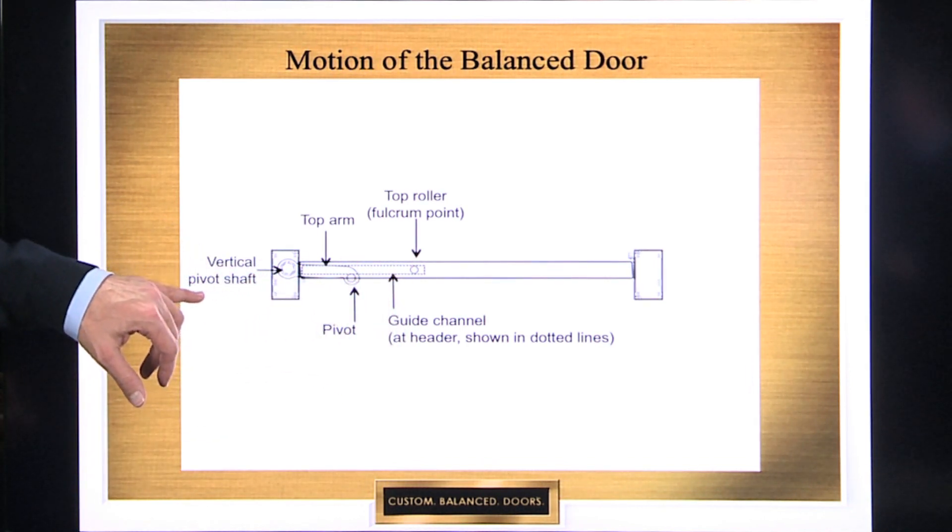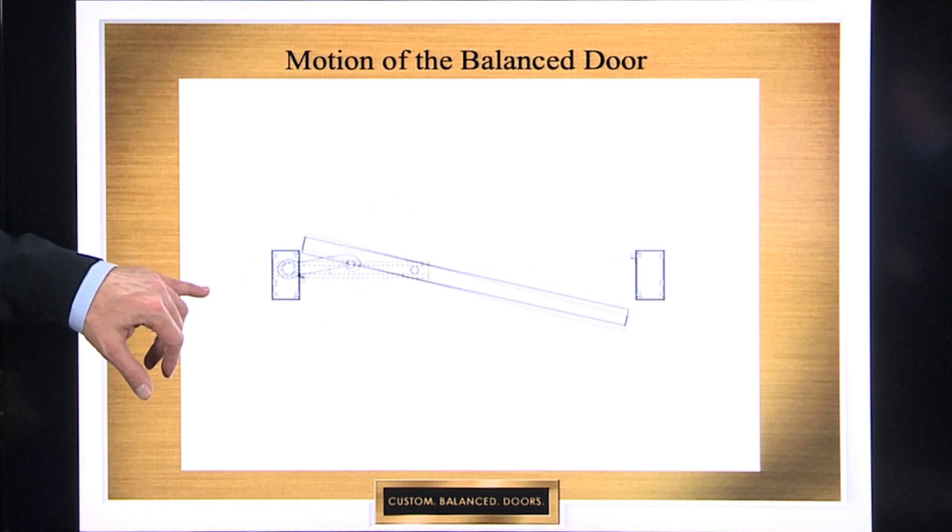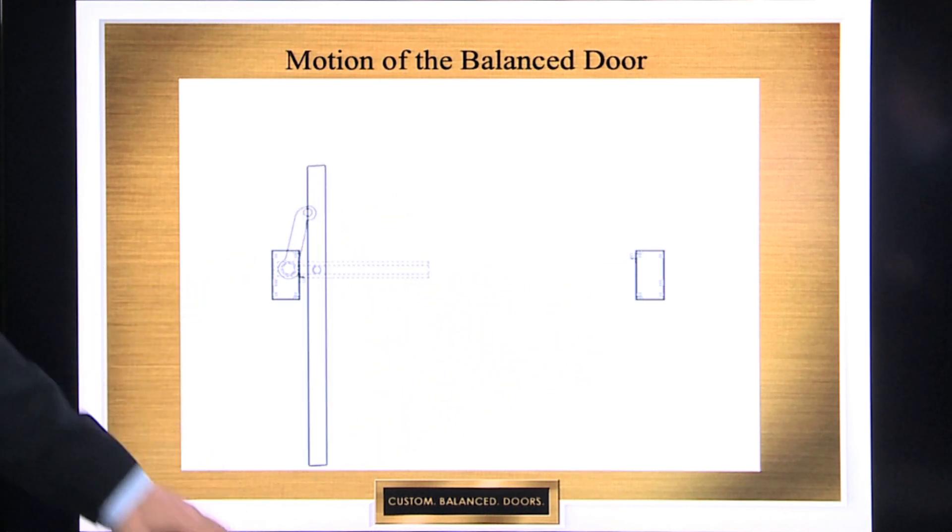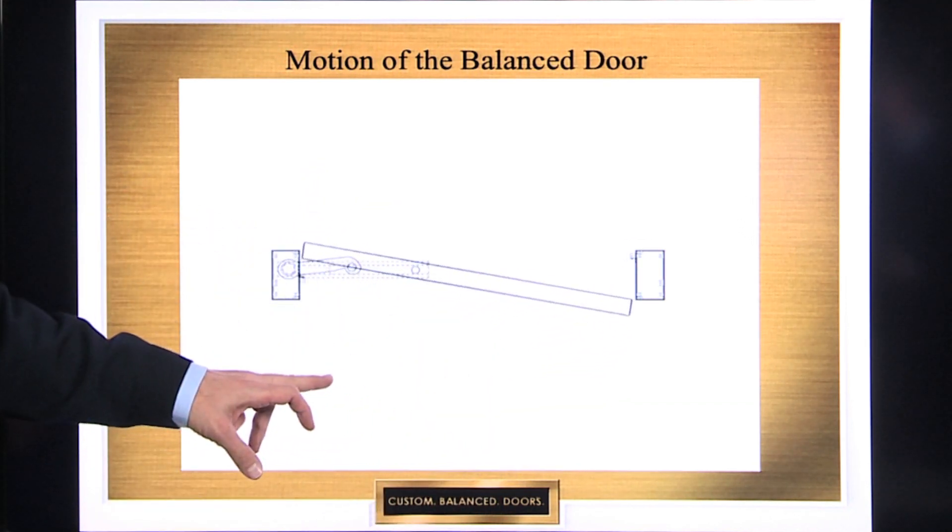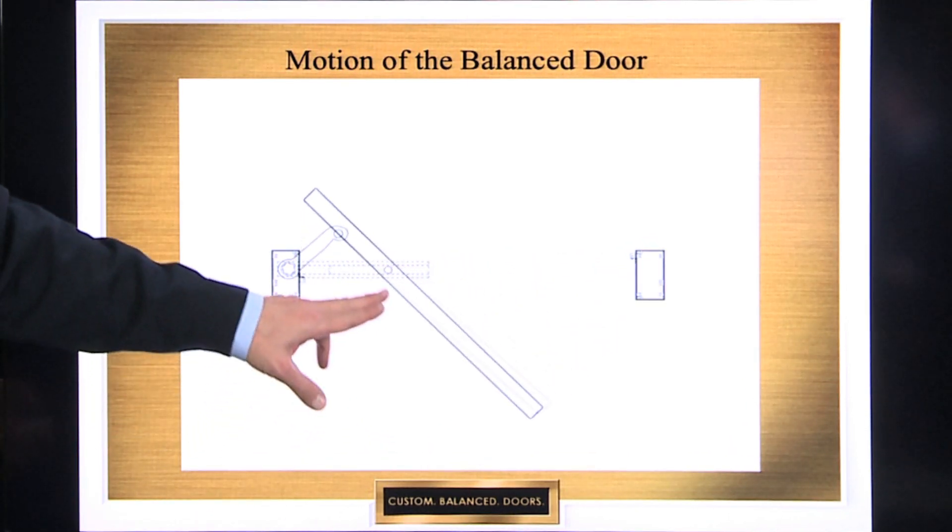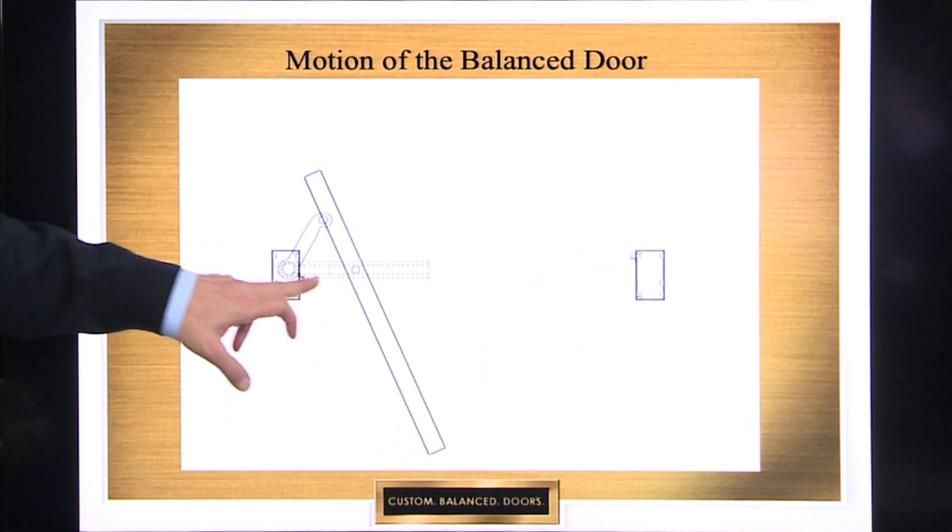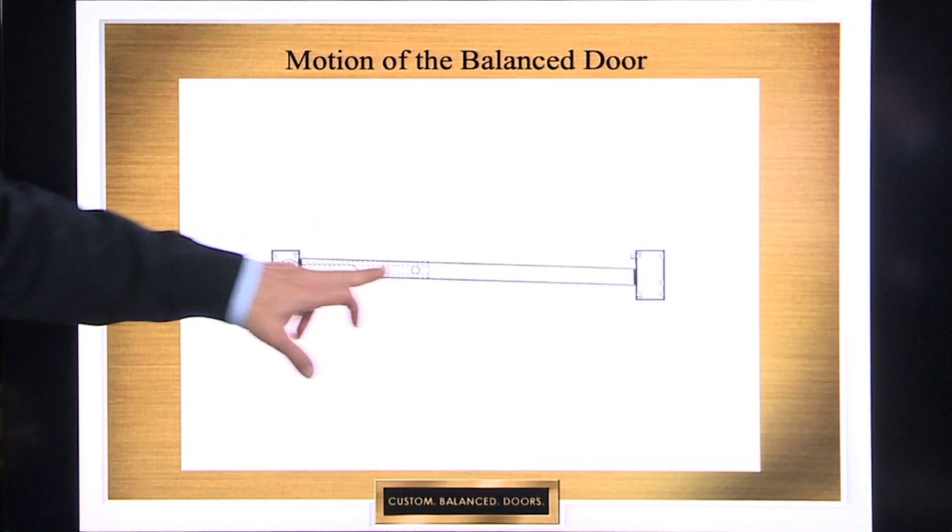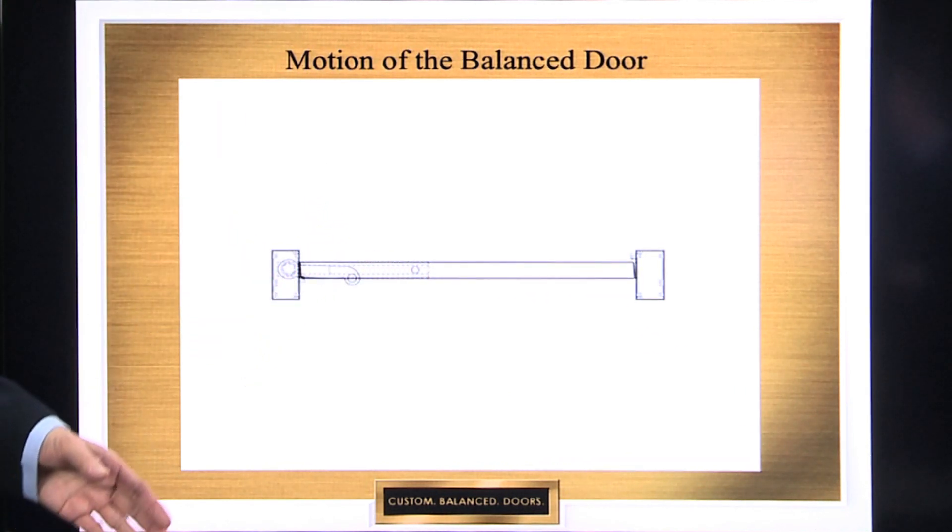So as you're going to see here, when we put this in motion, a true balanced door travels in an elliptical arc, not a circular arc. This pivot roller rolls back and forth in that guide channel, which is up in the underside of the head above the door.